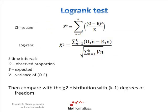The basic formula is similar to the chi-square test, where you have your observed measurement and expected value. The log-rank test is similar to chi-square with one exception: here you have not an expected value but the variance of this expression. Similarly to the chi-square test, you get the statistic and compare it with the chi-square distribution with k-minus-one degrees of freedom, where k is the number of your intervals.